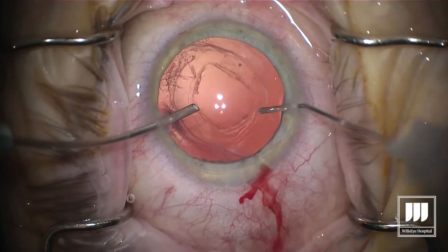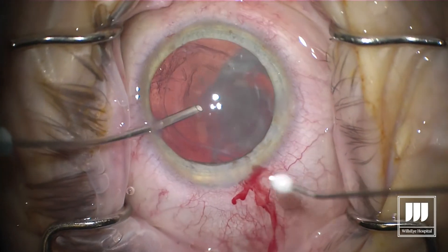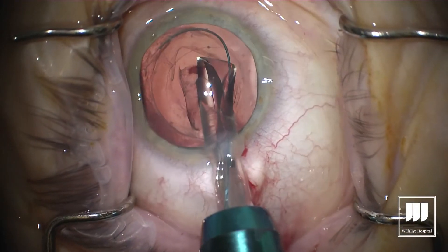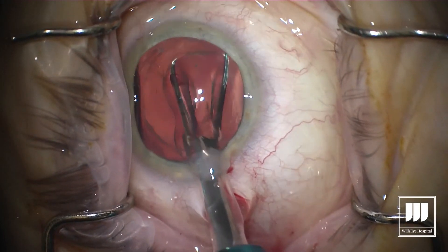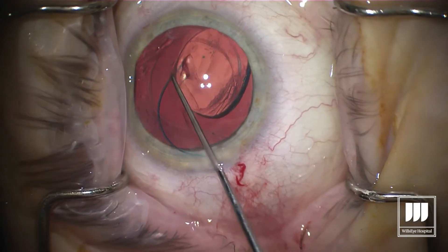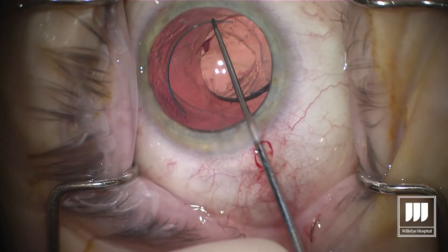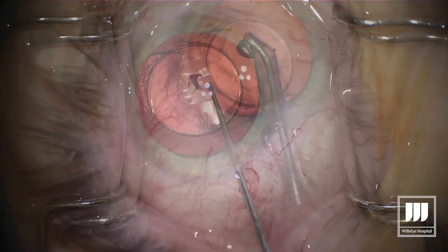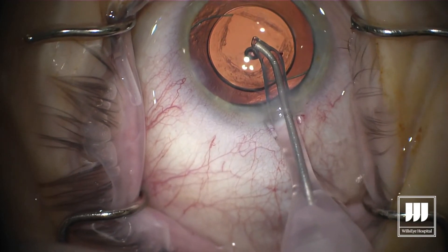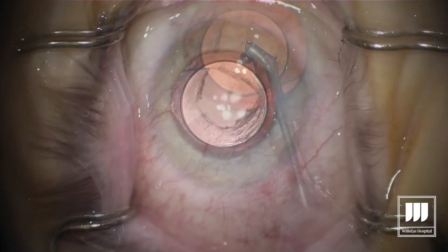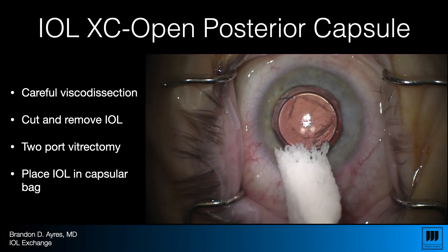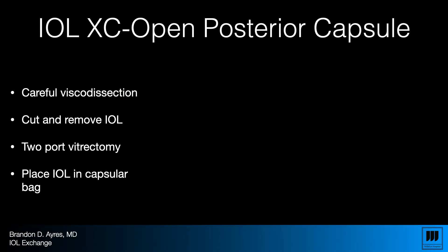We do a vitrectomy. Notice we have not disturbed the posterior capsulotomy, and we have an intact capsulorexis. Using triamcinolone and a two-port vitrectomy to check for vitreous. Here I'm actually able to use a three-piece IOL and put it right into the capsular bag — not the sulcus, but right back where it belongs. This is an open posterior capsule IOL exchange with an in-the-bag-for-in-the-bag placement. I used a three-piece IOL because I never imagined I'd get the implant out without disturbing the posterior capsule — but in this case we were able to.